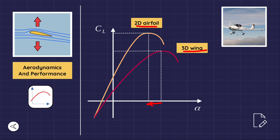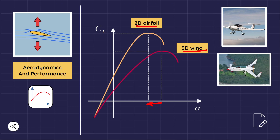For the same reason, a canard is desired to have a lower aspect ratio than the wing. Additionally, as the aspect ratio increases, the wing maximum lift coefficient CL max increases toward the airfoil maximum lift coefficient.